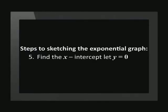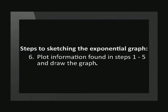Step 5 requires us to determine the coordinates of the x-intercept. We get these coordinates by making y equal to 0 and then solving for x. Finally, we plot the information found in steps 1 to 5 and draw the graph.